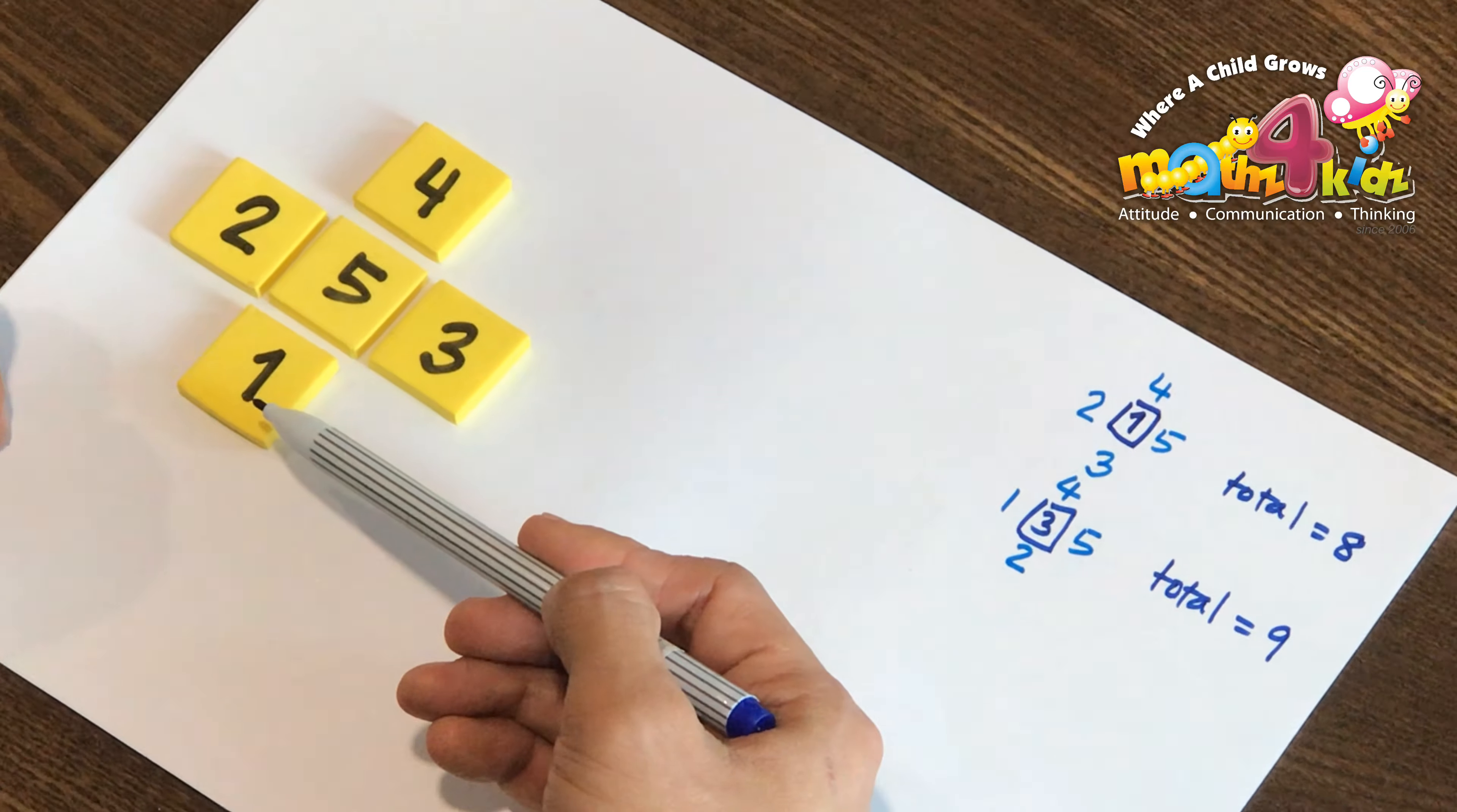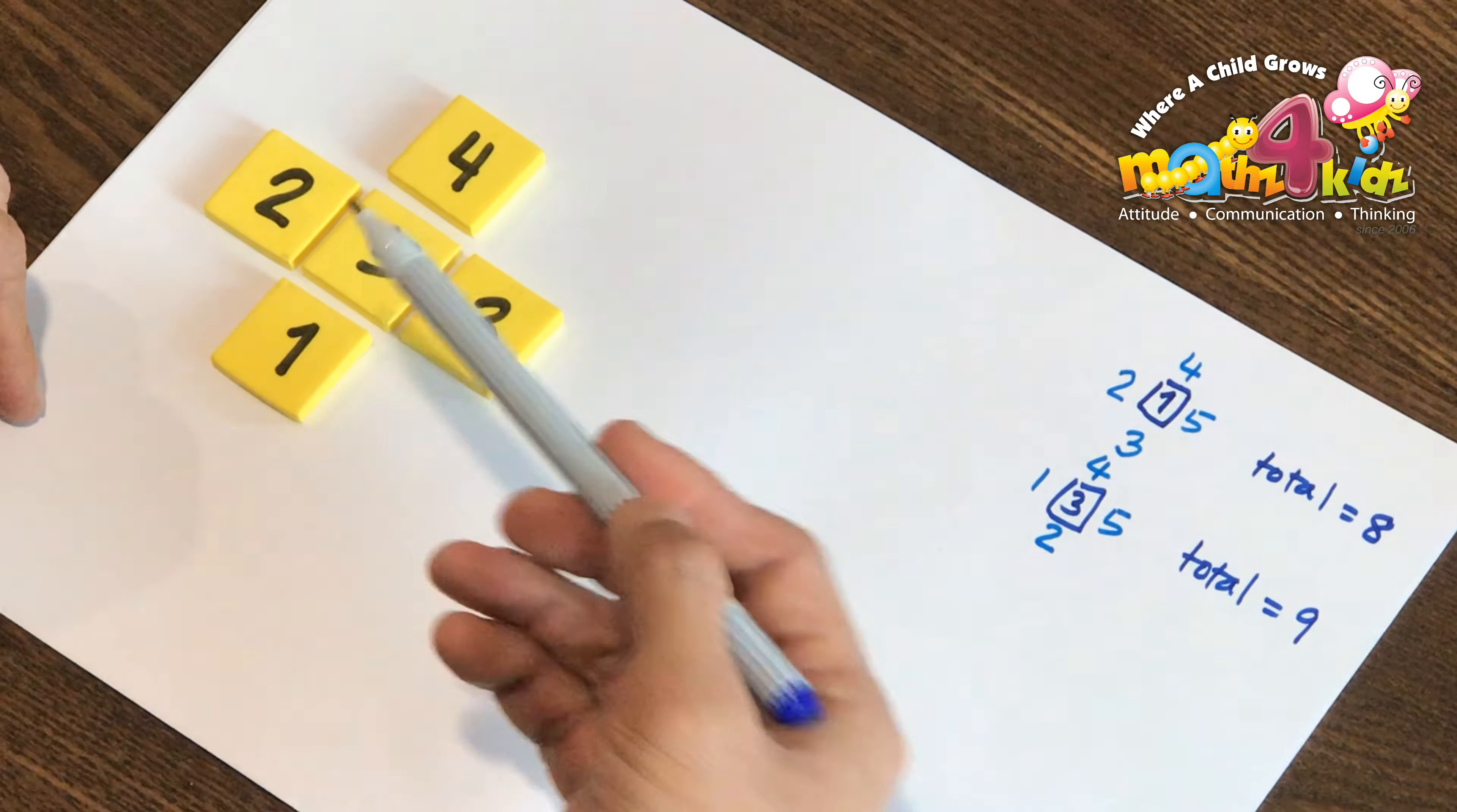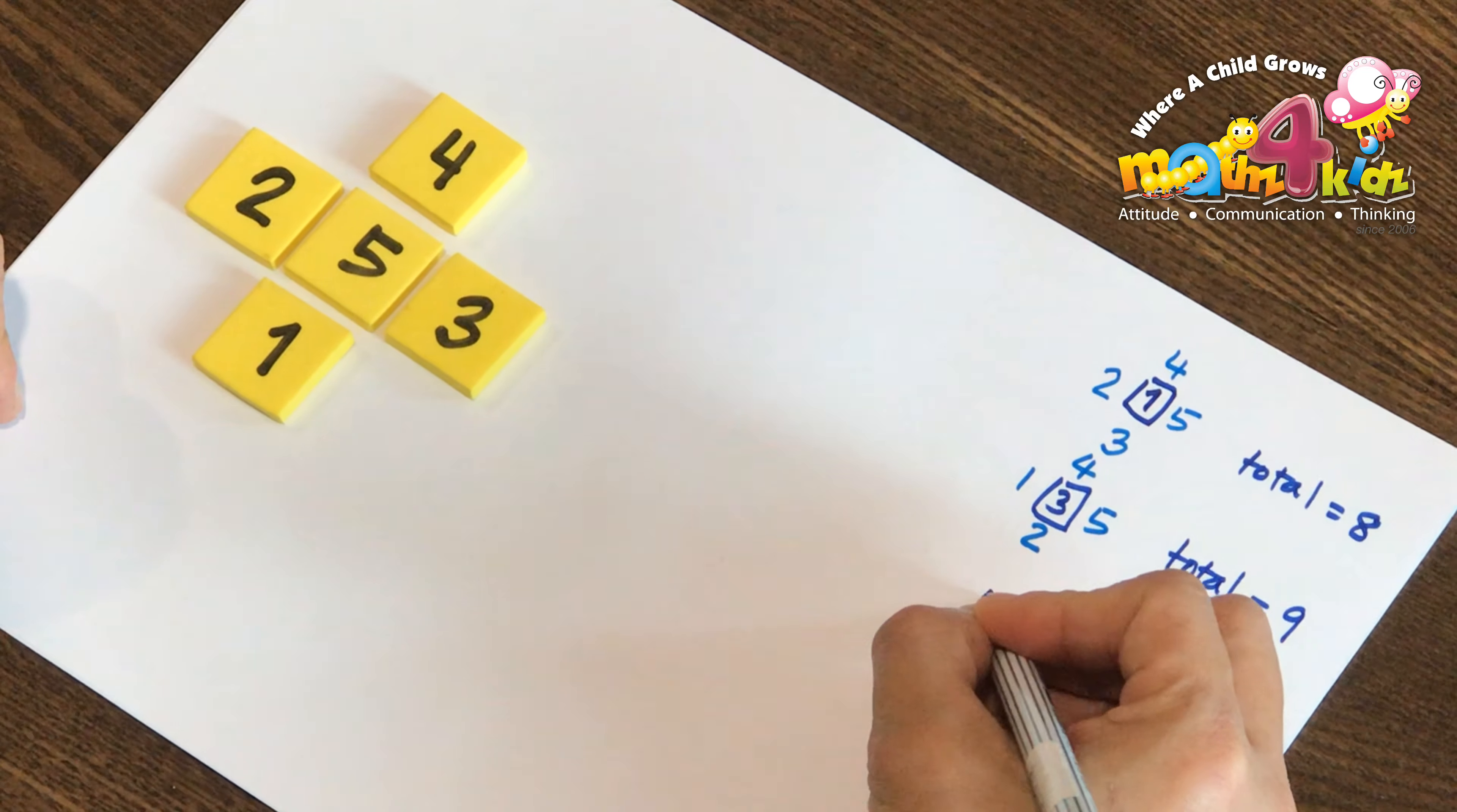4 and 1, 5, and 5, 10. 2 and 3, 5, 5 and 5, 10. That's correct. With 5 in the middle.